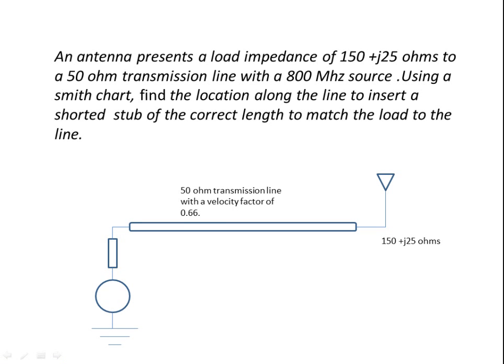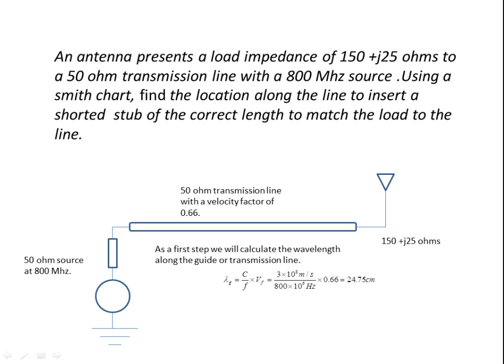Here's the pictorial. We have a signal source, 50 ohm source at 800 megahertz. The velocity factor of the line is 0.66 and the load impedance is 150 plus j25. As a first step, we will calculate the guide wavelength. The guide wavelength based on the information provided is 24.75 centimeters, based upon propagation velocity divided by frequency. Propagation velocity is C times VF, which is velocity factor.